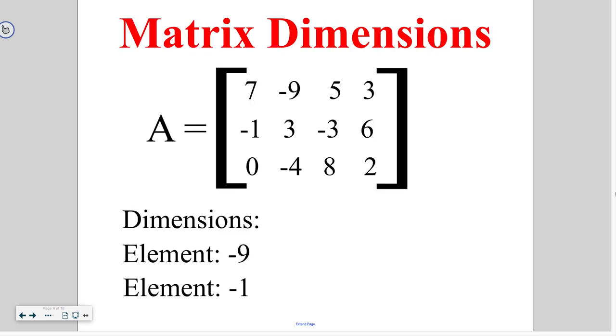So the first thing we want to talk about with matrix is dimensions and positions. So when we are looking at the dimensions of this matrix, we have three rows going across, so we've got three by, and I've got four columns going down, so this is a three by four matrix.